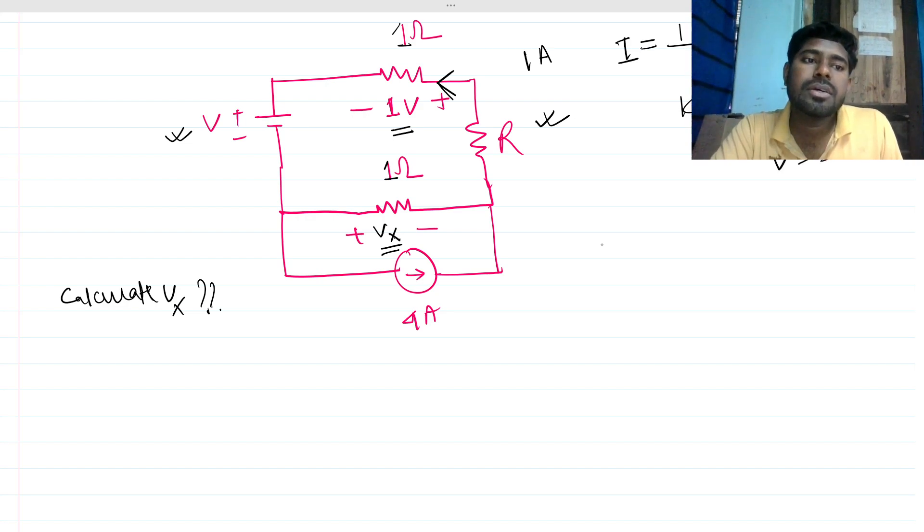V equals IR, so I is V by R. This is one, this is one, so it will be one ampere. One ampere current is flowing through that branch. This current has to flow through this branch as well because these two resistances come in series, so this will be one ampere as well.